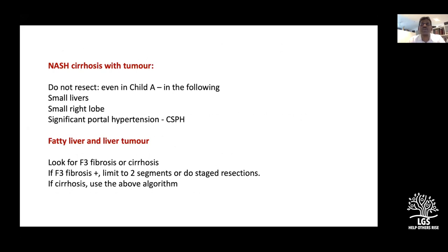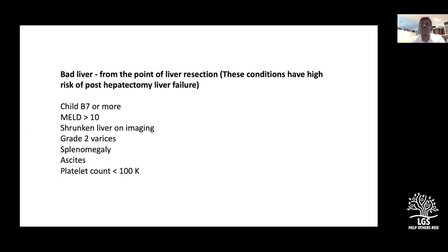Criteria for a bad liver from the point of liver resection: Child B7 or more, MELD more than 10, shrunken liver on imaging, grade 2 varices, splenomegaly, ascites even in small quantity, and platelet count less than 100,000. However, individual patient selection matters — if a patient is very good clinically and willing to accept risk, even three-segment resection has been successfully done in a B7 patient.